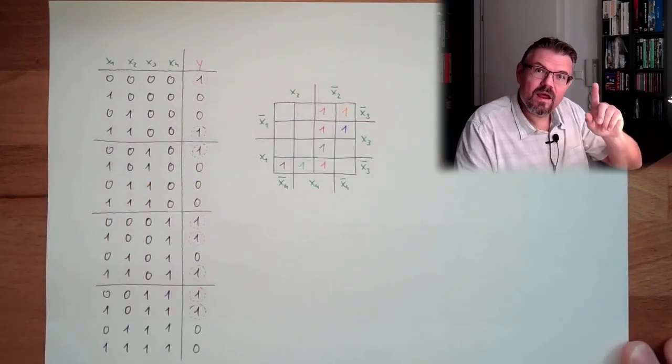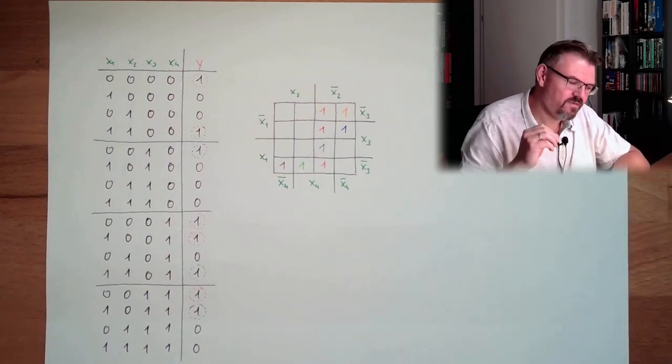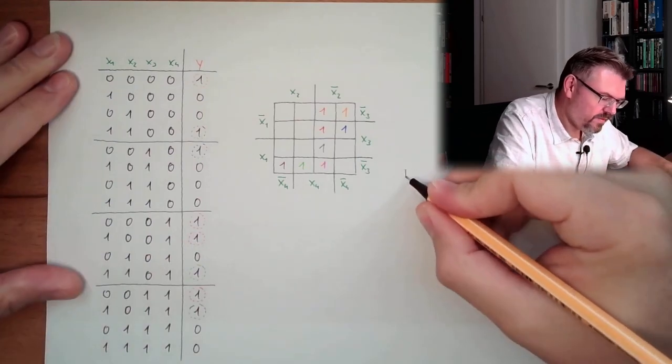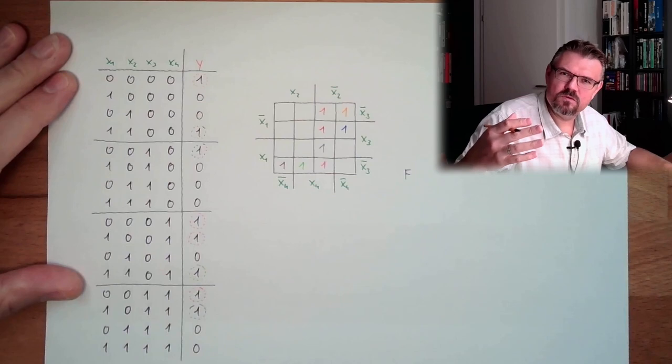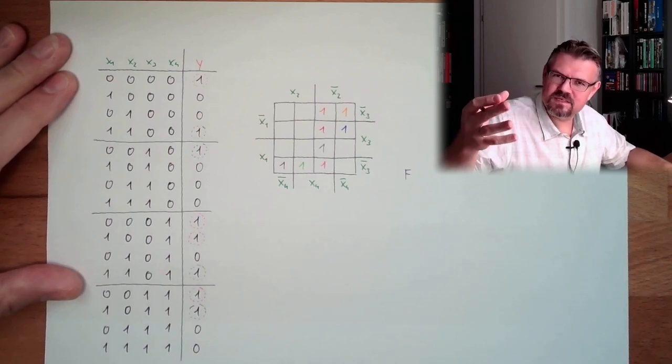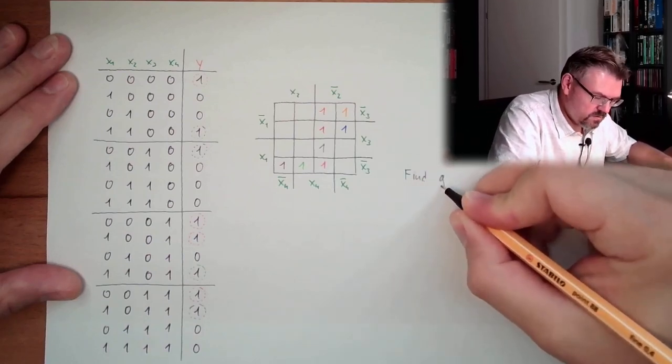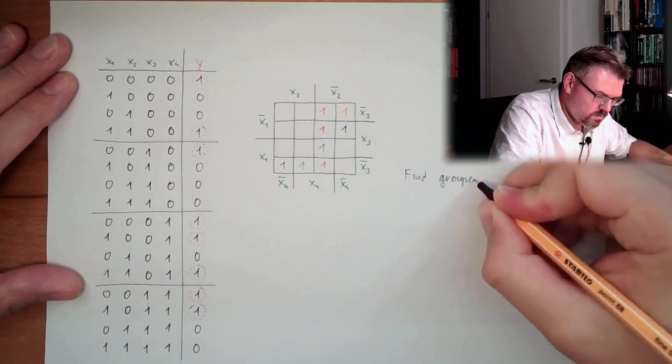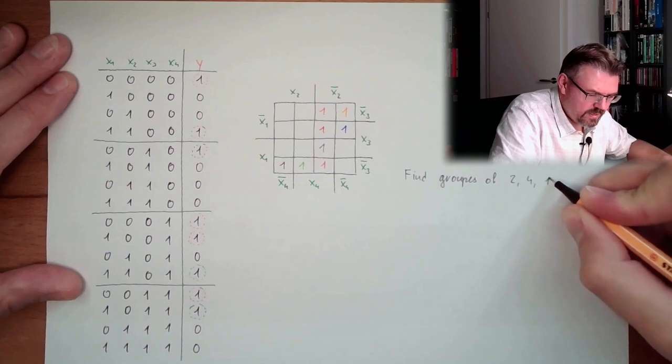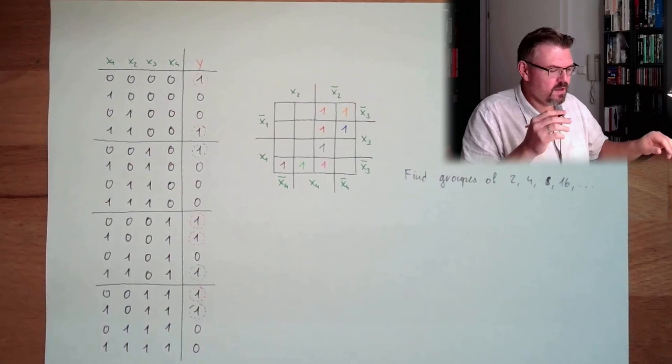This is now I transferred all the ones to this map and now it comes. Now I can start to simplify. I can find groups with 2 raised to a power of n, so a group of two, a group of four, a group of eight, a group of 16. Always find groups of 2, 4, 8, 16. This I want to do. The groups, they must, not diagonal, they must be blocks, rectangles.